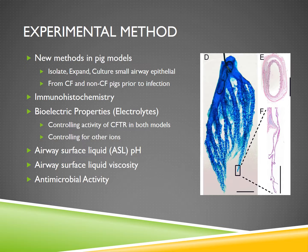They used many immunohistochemical and staining techniques, as you can see in the figure to the right, where they show an isolated lung and the large and small lung structures, as you can see in D and F there. They studied the bioelectrical properties, which refer to the electrolyte transport — chlorine and bicarbonate — in these epithelial cells. They were able to control for CFTR in both models based on whether they were CF positive or negative, and control for other ions to study one ion at a time. They also measured the airway surface liquid pH and viscosity and related that back to antimicrobial activity.